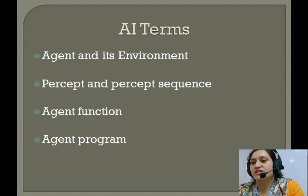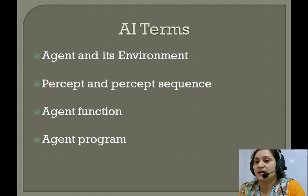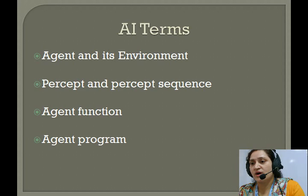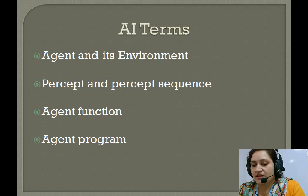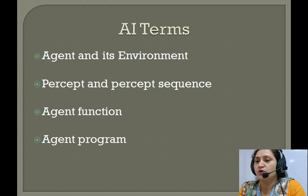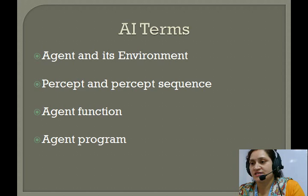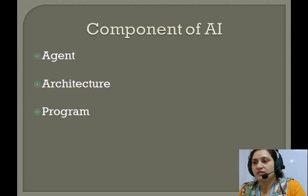Now let us discuss what is agent function. Agent function is a mathematical function which maps each and every possible percept sequence to a possible action. For example, an ATM machine releases money only once when you follow the procedure shown on the screen — that is how an ATM machine demonstrates the functionality of an agent function. When we talk about the agent program, to develop it we tabulate all the agent functions and put a bound on the length of the percept sequence that we need to consider, else the search will go vague, so we restrict ourselves to certain limitations.